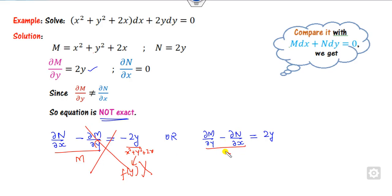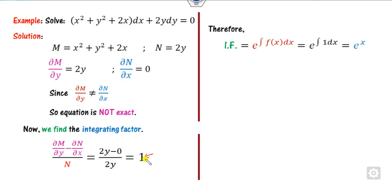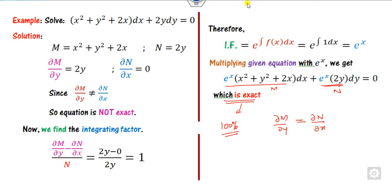So I divide by N instead. What is the value of N? It is 1, so the result is a function of y only — it is a constant. The partial derivative gives y, and since I divided by N, the integrating factor will be e raised to the power of x. Once you get the integrating factor, multiply this differential equation by e raised to power x, and it is exact — there is no need to verify again.